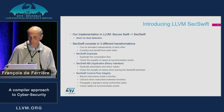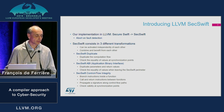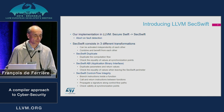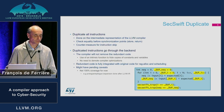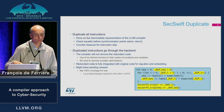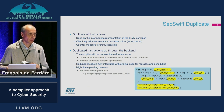The control flow checking is based on a signature which is propagated along control flow edges, and at some synchronization points, we check the validity of the signature. I will go through these three points in detail.